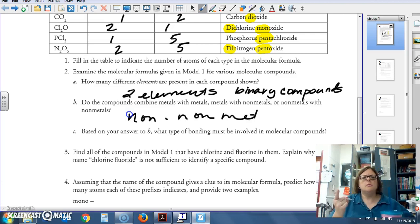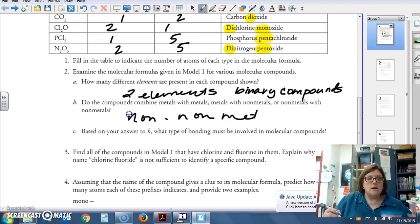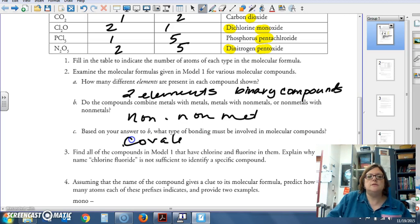Quick review. Do molecular compounds or covalent compounds melt quickly or melt slowly? In other words, do they have a high melting point, meaning they melt slowly, or do they have a low melting point, meaning they melt quickly? That's right. They melt quickly. They have low melting points. Just seeing if you remember that. Based on your answer to B, what type of bonding must be involved? Well, if it's nonmetal and nonmetal, what do we know? It's covalent bonding.